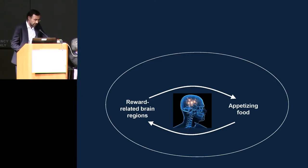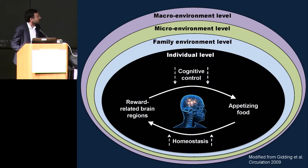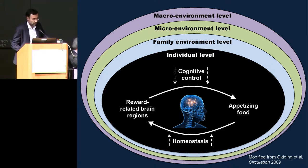The majority of neuroimaging studies give us a kind of microscopic view of the problem — reward-related regions, specific brain areas, and the role of appetizing food tasted during scanning. But reality is much more than that. We have cognitive control influences, homeostasis, and environmental contributors at the family level, the micro-environmental level such as neighborhoods or communities and schools, and then macro-environmental policies — all of which ultimately impact and modulate the association between reward-related brain regions and food.